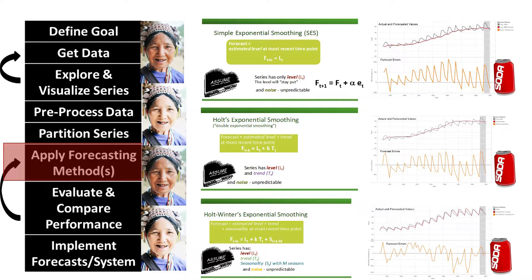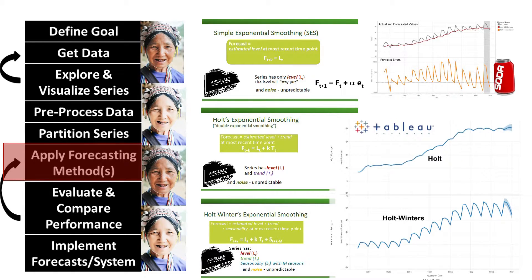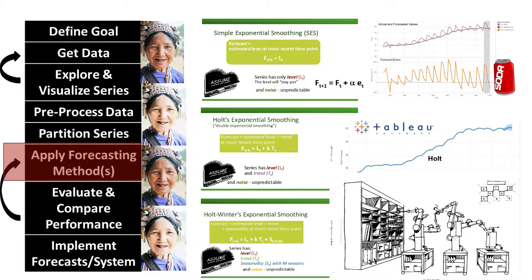These different variations differ in their abilities to capture trend and seasonality. In all cases, they rely on taking a weighted average of past values so that weights decay exponentially into the past. We also discussed prediction intervals for exponential smoothing methods and automation. The specialty of these methods is that they're cheap to compute, easy to automate, and can fit local patterns that change over time.